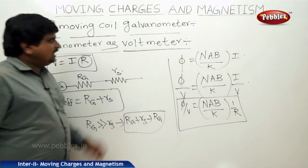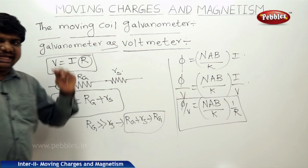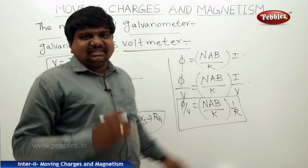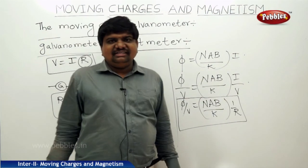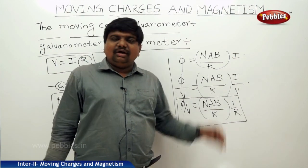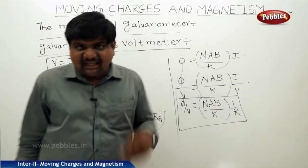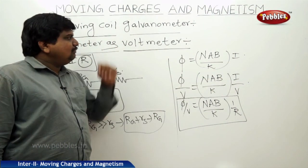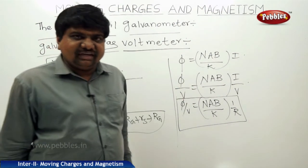In this lesson we have started with what is magnetism and the different devices which are applications of magnetism. We have seen the magnetic field at different points due to curved and linear lines, and finally we finished with the moving coil galvanometer. With this concept, the chapter is complete.